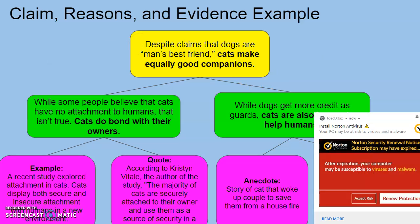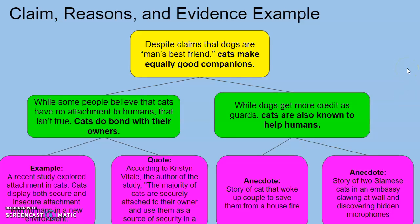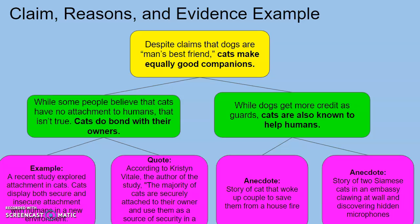For the part about cats helping humans, anecdotes are used, because when talking about cats and dogs it doesn't matter as much if you have hard data. Some stories: a cat who helped a couple wake up to save them from a house fire, and a really interesting story from the 1960s where two Siamese cats at an embassy in Russia clawed at the wall because they were hearing sounds — and it turns out they discovered hidden microphones because the embassy was being spied on during the Cold War. Those are examples of why claims, reasons, and evidence are important, and how to use them to strengthen your argument.